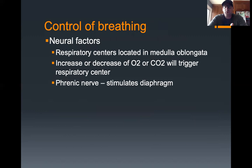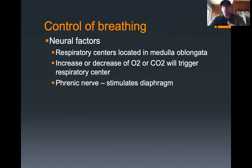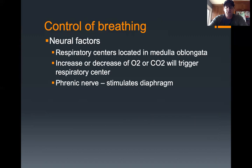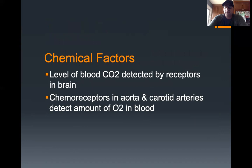Breathing rate is controlled by both neural and chemical factors. The respiratory center that controls breathing rate is located in the medulla oblongata. A nerve exits between the third and fifth cervical vertebrae and travels to the diaphragm to make it contract and relax — that nerve is called the phrenic nerve. The chemical factors are carbon dioxide and oxygen levels: CO2 levels are detected by receptors in the brain, while receptors in the aorta and carotid arteries detect the amount of oxygen in the blood.